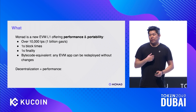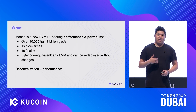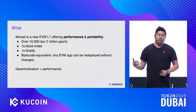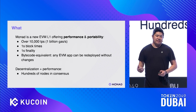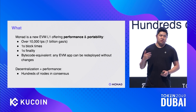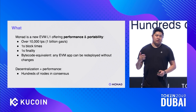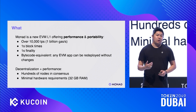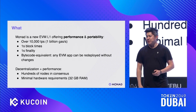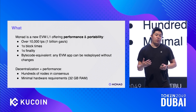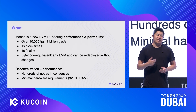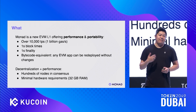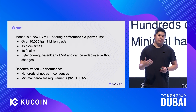Why is this important? This is important because we want both decentralization and performance. Monad has hundreds of nodes in consensus, contributing to block production, with minimal hardware requirements — specifically 32 gigs of RAM. It's important to have really low hardware requirements so that anyone can run a node and have access to the full state and consult the exact state of the world at any given time.